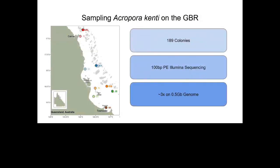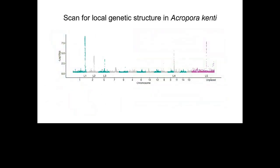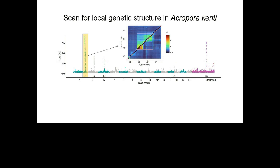This creates a barrier to gene flow between the inverted and ancestral arrangements, and it also creates signatures that we can detect just using SNP data alone. We went to an old dataset of shallow whole genome sequencing from corals on the Great Barrier Reef and scanned the genome using a statistic that captures local genetic structure arising due to this blocked recombination. You can see five really clear signatures that pop out from the background, and zooming in on each one, there's a really strong signal of linkage disequilibrium matching what we expect.